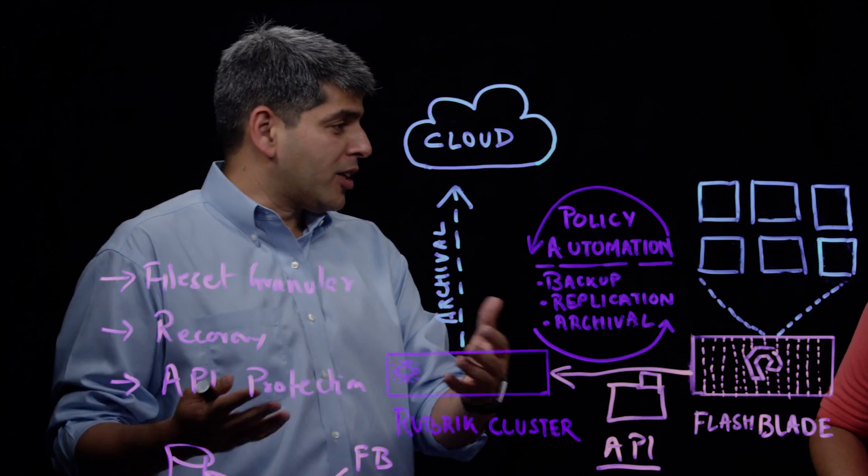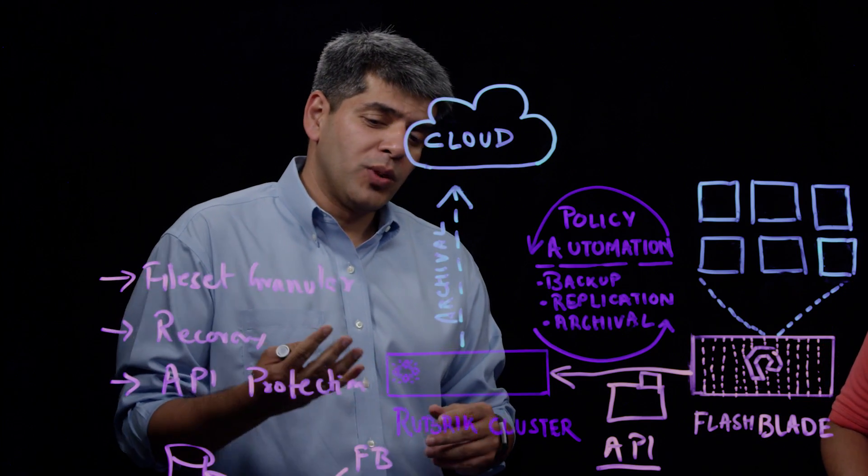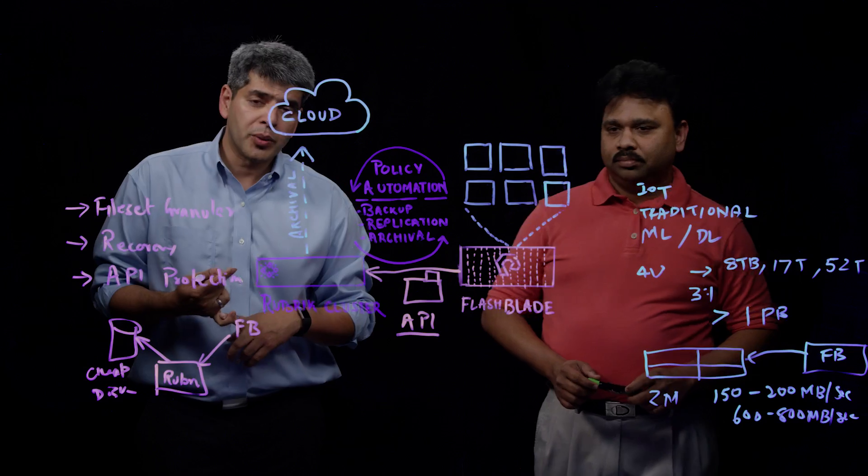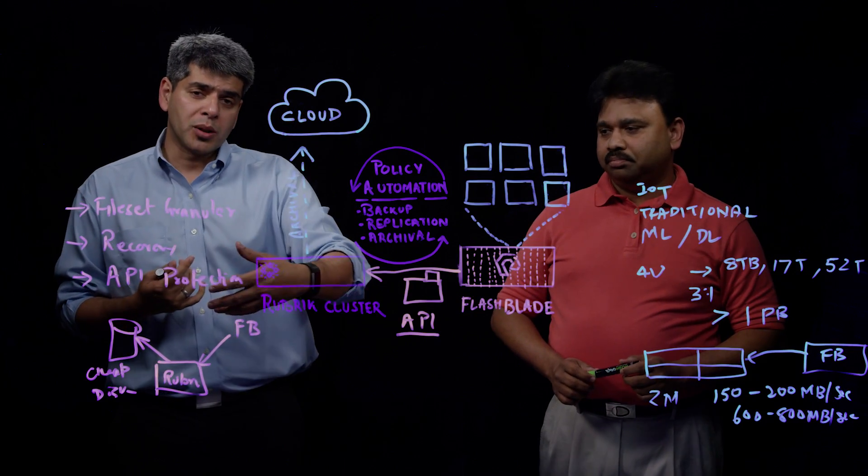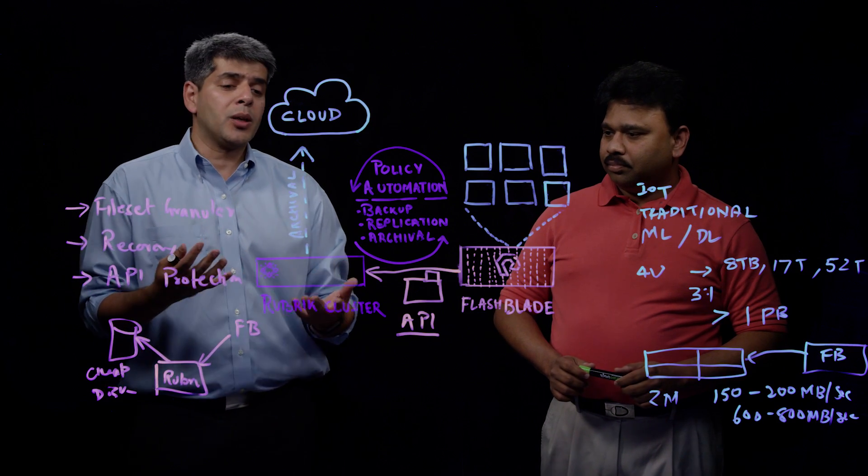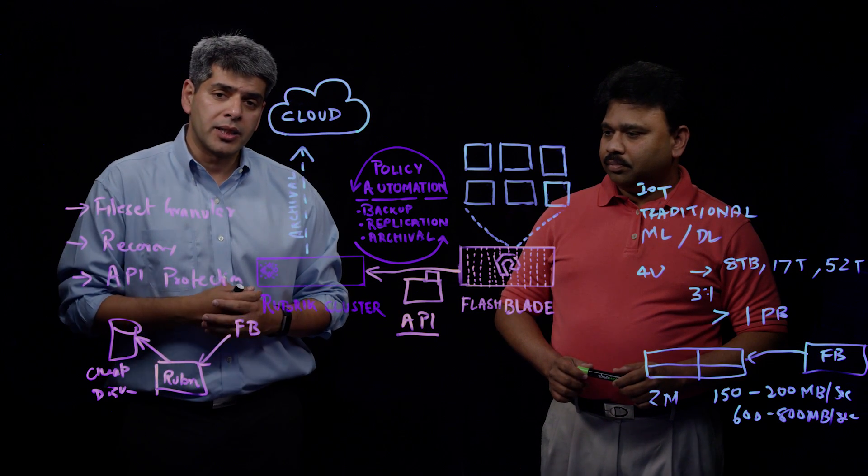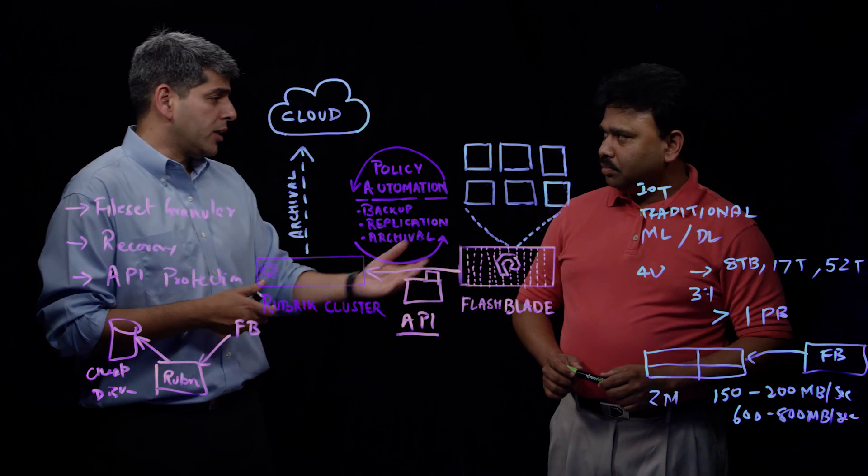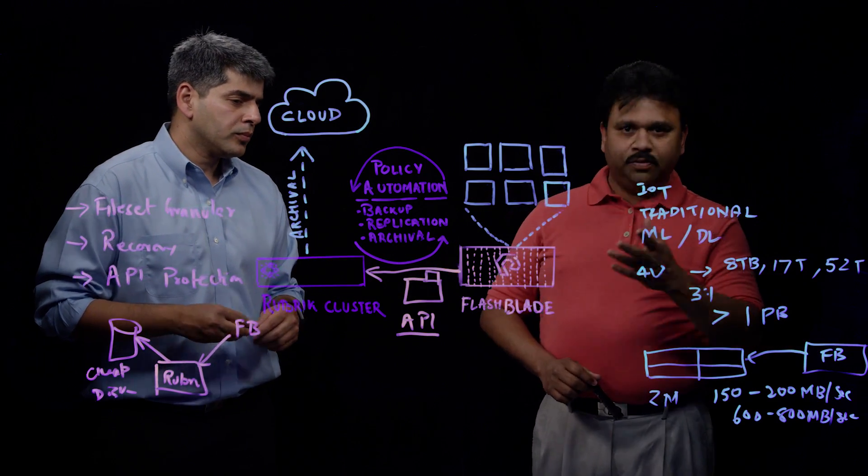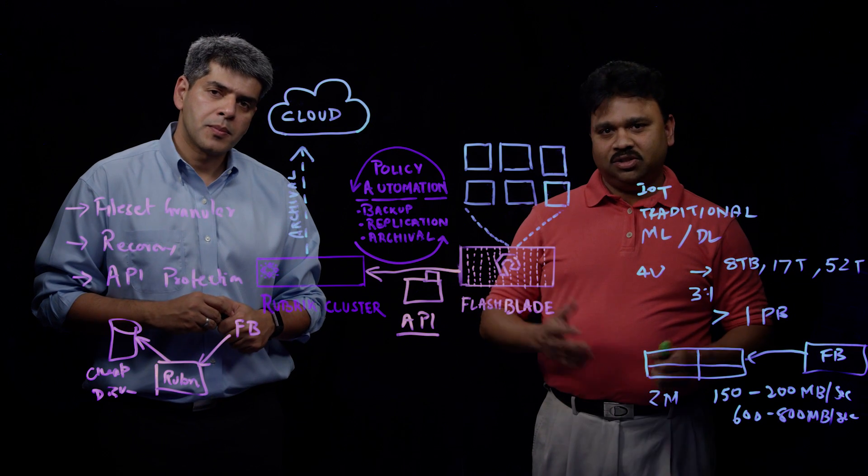So Radha, let's summarize for our customers on how it's going to work. So with Rubric and Flash Blade together we can protect any NAS share running on Flash Blade, directly mount onto a Rubric, protect it, replicate it, archive it to any cloud or other NAS device or any target. So with that Radha, you want to have any closing comments? Yeah, I think you pretty much summarized it well. I think if you want to find more details just check either of our websites.